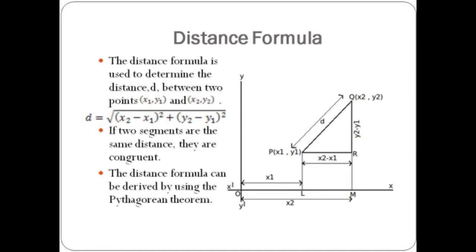Looking at the picture, it is clear that the distance between p and r is going to be x2 minus x1, and the distance between r and q will be y2 minus y1. Therefore, the distance between p and q, which is the hypotenuse of the triangle, is going to be equal to the square root of x2 minus x1 quantity squared plus y2 minus y1 quantity squared, which is the distance formula.